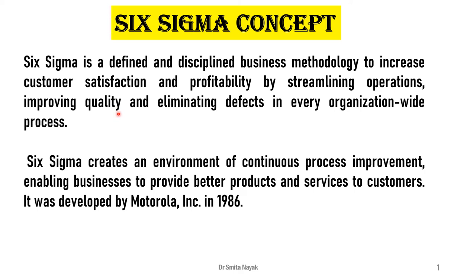Six Sigma consists of quality control techniques and tools to improve current processes, products or services. It seeks to improve the quality of the output of a process by identifying and removing the causes of defect and minimizing variability in manufacturing and business processes. Six Sigma is defined as a disciplined business methodology to increase customer satisfaction as well as profitability by streamlining operations, improving quality and eliminating defects.